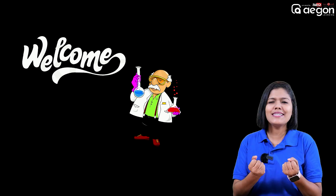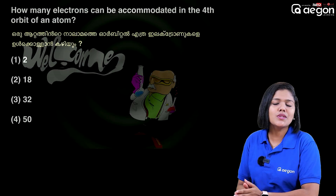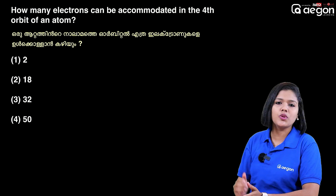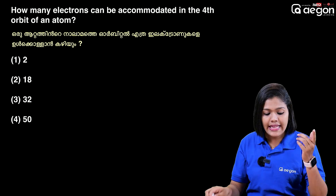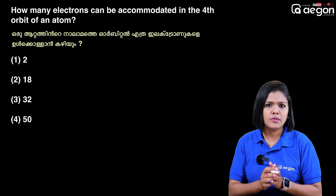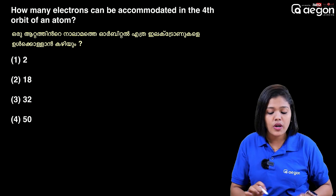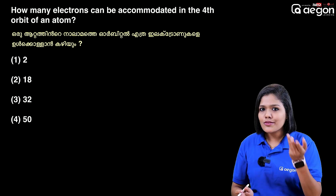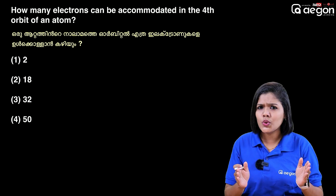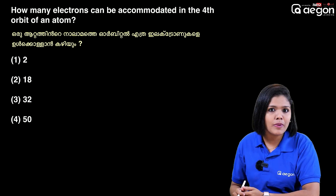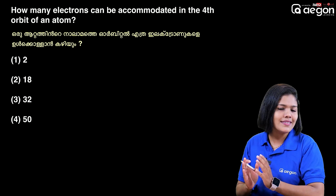Now I am going to discuss this: how many electrons can be accommodated in the fourth orbit of an atom? How many electrons, atoms, and orbits? We will not be able to discuss this right now. Where are we going to study this? We are going to study this in the ninth class.